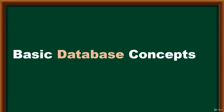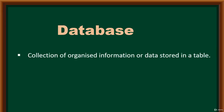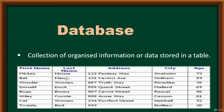Hello and welcome. I'm going to introduce you to some basic database concepts, starting with a database. What is a database? A database is basically a collection of organized information or data stored in a table. A table consists of columns (shown in blue) and rows — these rows are known as records, and each record is unique in a table.